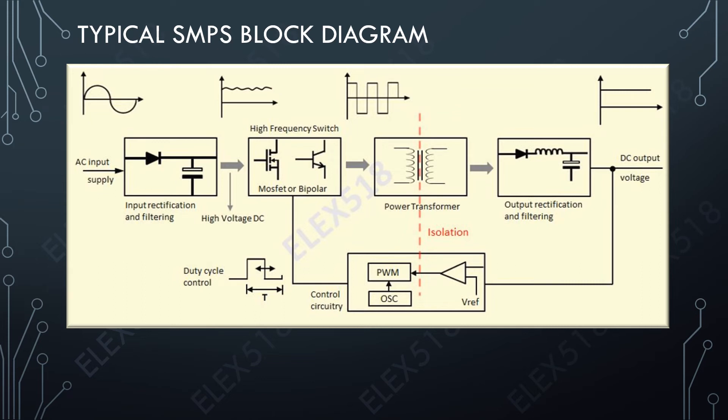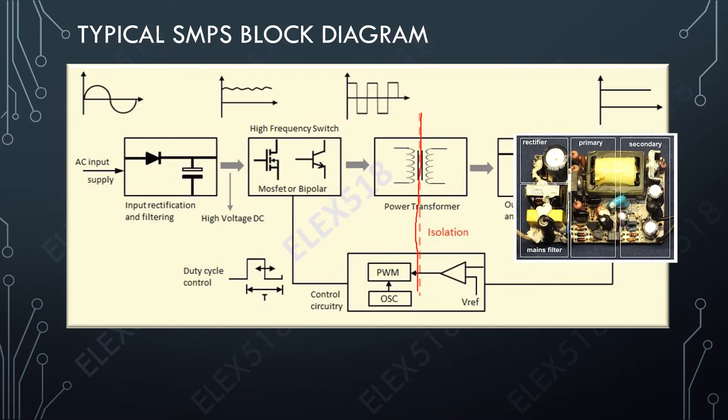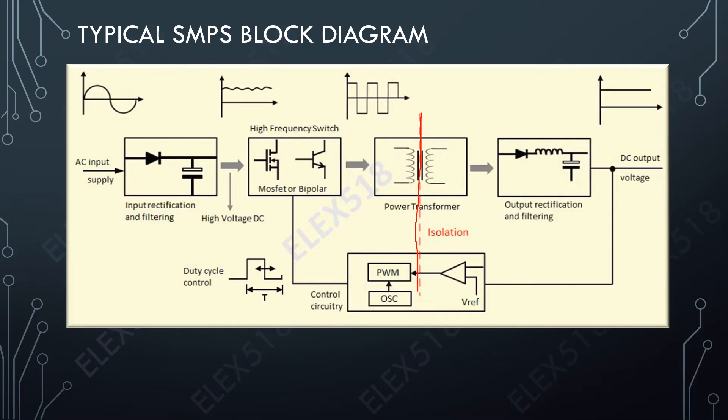In this slide I am showing you the typical SMPS block diagram. As you can see, there's an isolation line which determines the primary and secondary area of the SMPS power supply. On the left side is the primary area and on the right side is the secondary area. I will try my best to explain to you the block diagram of SMPS power supply.